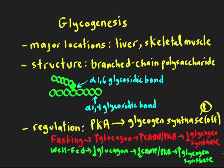So it should make sense that PKA turns off glycogen synthesis when we're fasting and turns it on when we're in the well-fed state. This lecture covered the major sites of glycogen synthesis, a little about its structure, and regulation in the fasting and well-fed state. That concludes this lecture on glycogenesis.